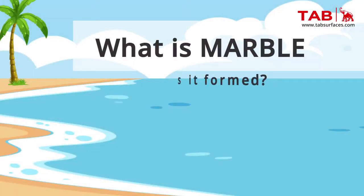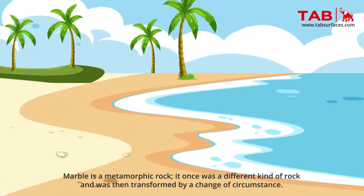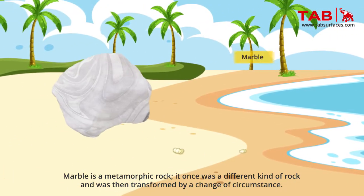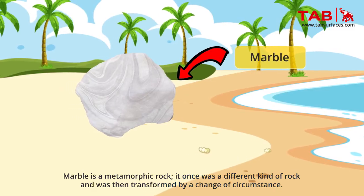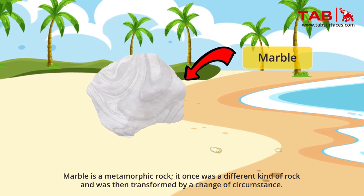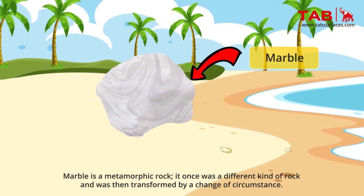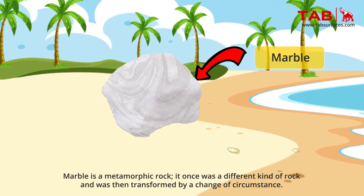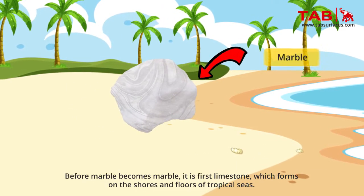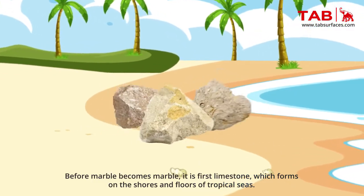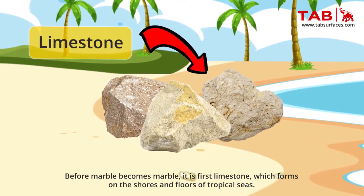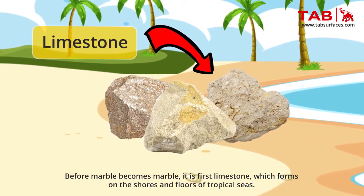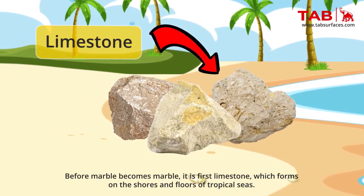What is marble and how is it formed? Marble is a metamorphic rock — it once was a different kind of rock and was then transformed by a change of circumstance. Before marble becomes marble, it is first limestone, which forms on the shores and floors of tropical seas.